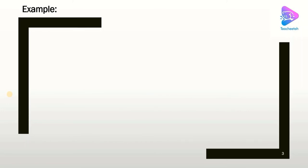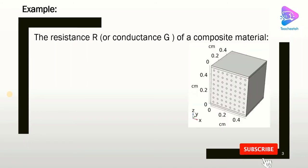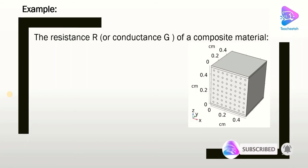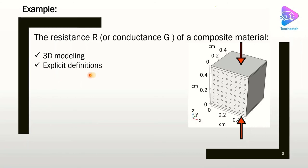Let's do one example to see how we can use the Electric Currents interface. In this study, we are going to find the resistance or conductance of a composite material as shown in the picture. We are dealing with a 3D design. On the top and bottom we have two layers, and the electric voltage or current is applied through those. Inside the two layers we have a composite structure with some reinforcement through the solid — it can be different materials. We also discuss explicit definitions as an important feature in COMSOL and global properties.